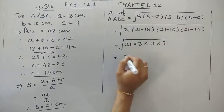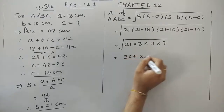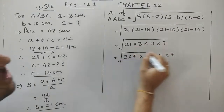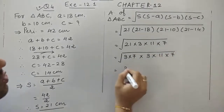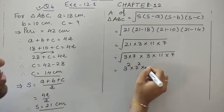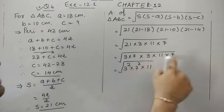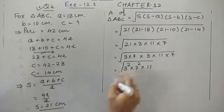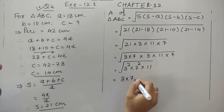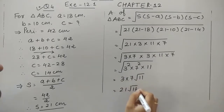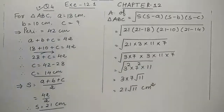Let's find the prime factors. 21 is 3 times 7; 3, 11, and 7 are all prime. We have 3 appearing twice and 7 appearing twice, while 11 appears only once. So we take out the square root for the even-powered factors. The area of this triangle is 21√11 cm².